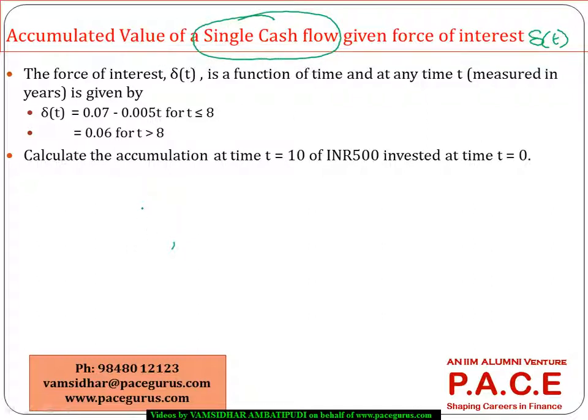The question will more or less be like: I'm investing some X today and the current force of interest is some delta T. If that's the case, what would be the value at the end of 10 years of the same X if I have invested once at the rate of delta T every year?